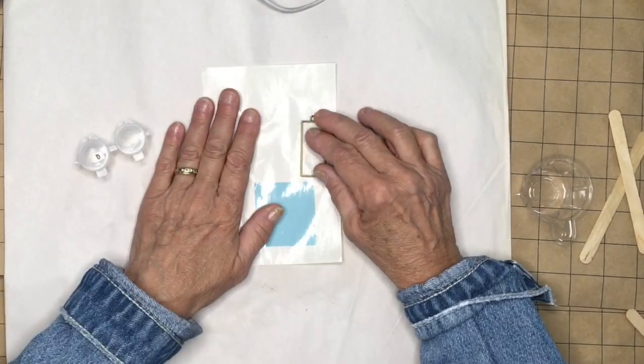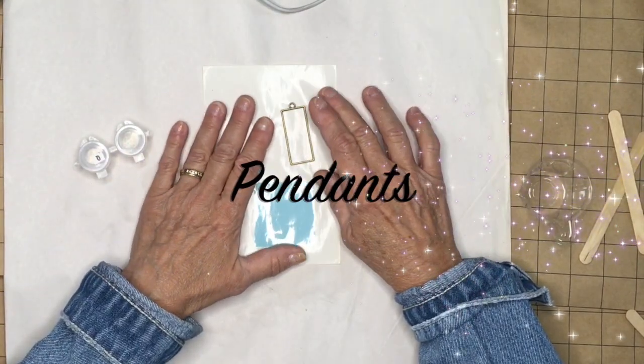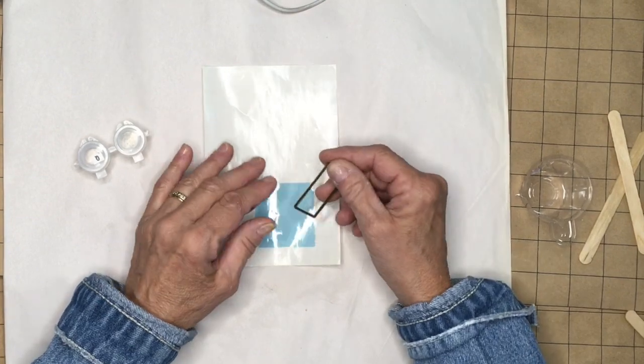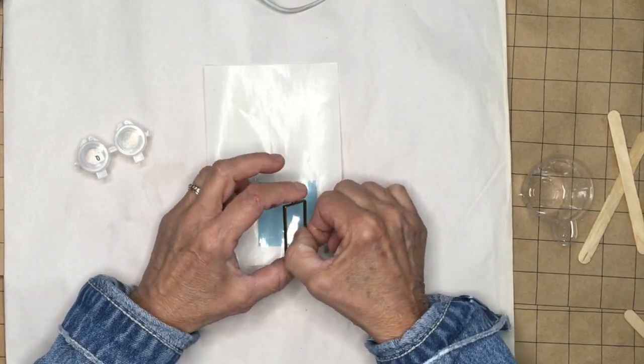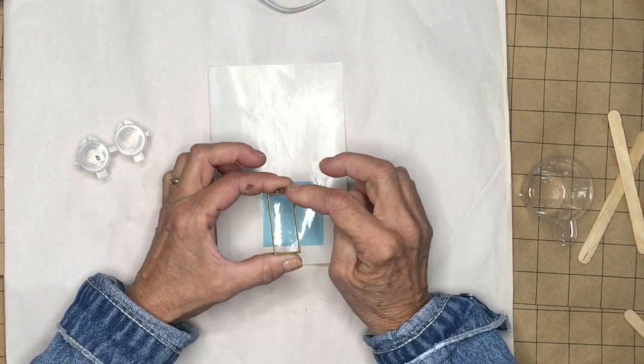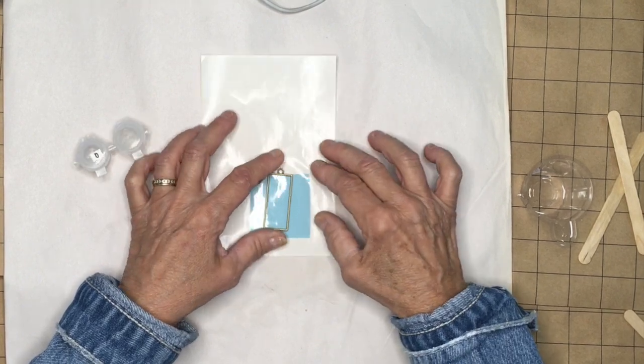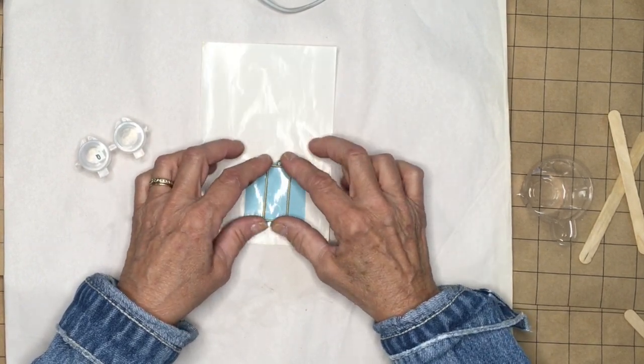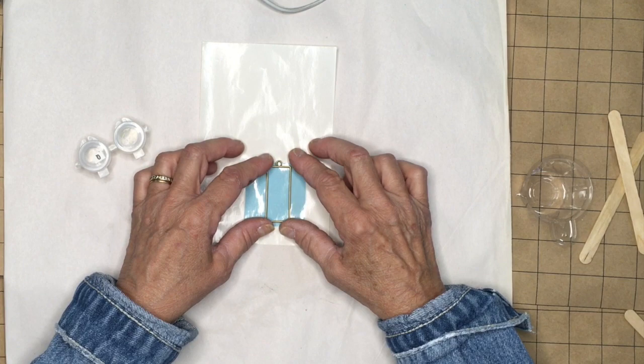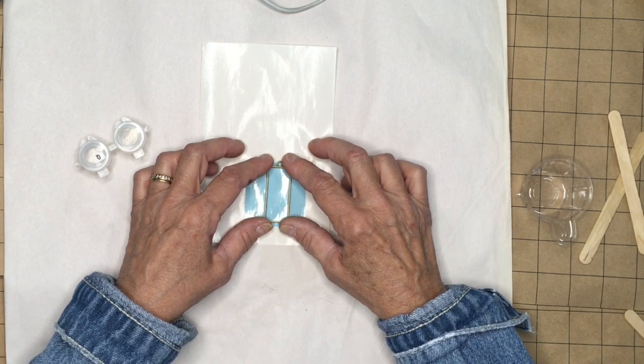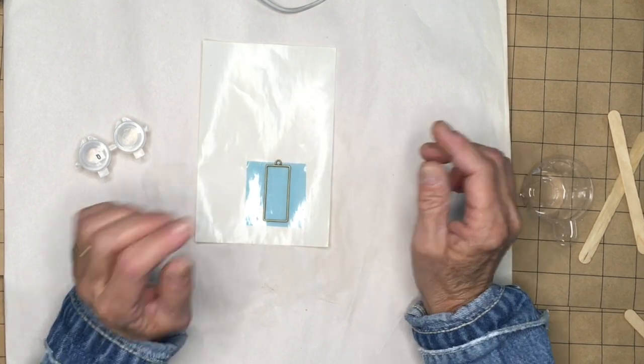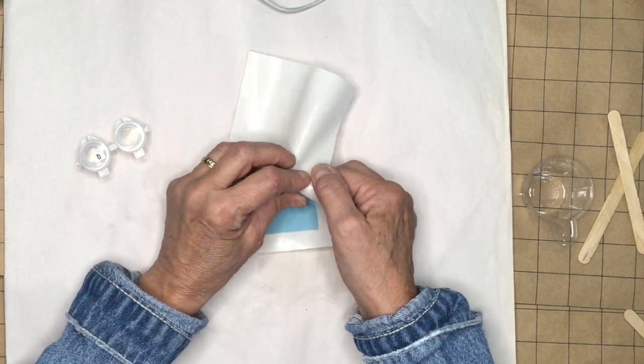So we're gonna be doing some pendants next. First thing we're gonna do is this metal bezel, which is more of a rectangle, and we're gonna fill it with quick cast resin. After that we're gonna be doing decoupage and adding fun things to it. So let's get started.